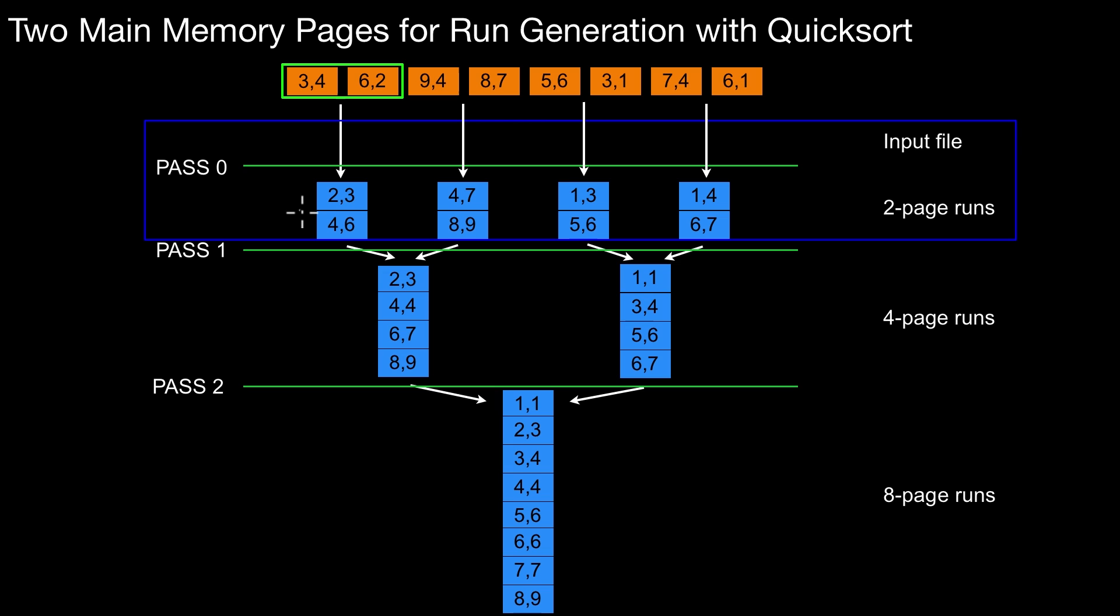An obvious thing we observed was that the size of the initial runs you generate have similar size as the available main memory. Because the algorithm fills up all the available main memory and then runs the main memory sort algorithm and writes out those sorted runs to disk. So this is the same size as the available main memory.